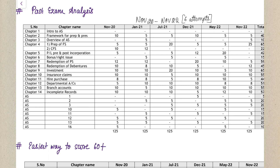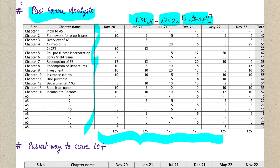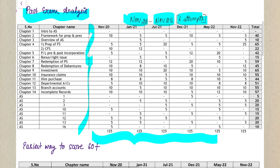Starting with our first important topic: the past exam analysis. As you can see on your screen, I have covered around six attempts from November 2020 till November 2022, and I have given you a chapter-wise breakup of how many marks have been asked in each attempt — from chapter one until chapter 14, plus all your accounting standards. In each exam, around 125 marks of questions are asked, of which 25 are optional.